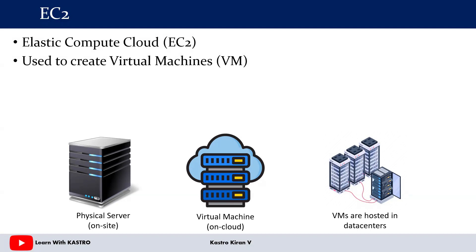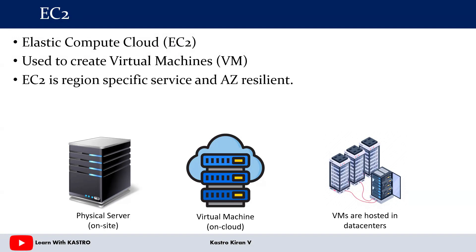With respect to the EC2 service, we need to remember one important thing: EC2 is a region-specific service and also availability zone resilient. Unlike S3, which is a global service, EC2 is region-specific. Suppose you are working in the Mumbai region and you create an EC2 instance there — you will only find it when you go back to the same region. If you switch to the North Virginia region, you will not find that resource. That is what region-specific means for EC2.